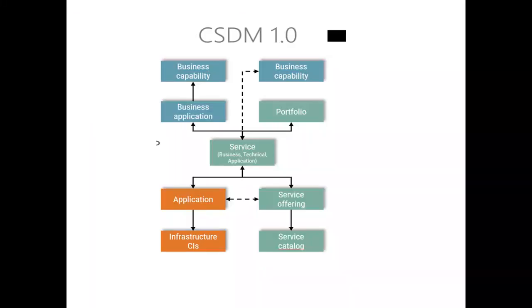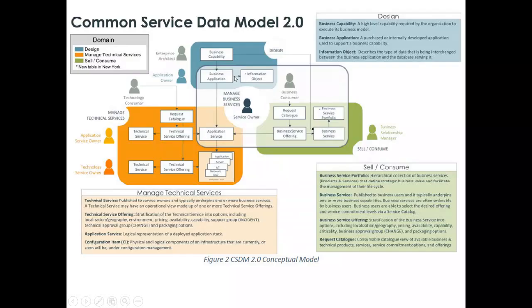You can see a drastic change has been done from just a simple flowchart with two or four boxes. Here they brought up everything new — the design phase, sell and consume, and managed technical services. This is the principle of standard definitions, which we will see in 4.0 as well.